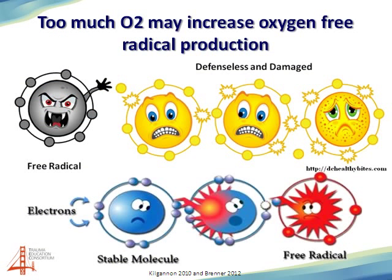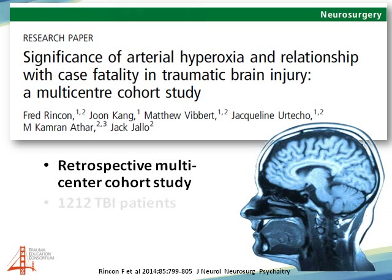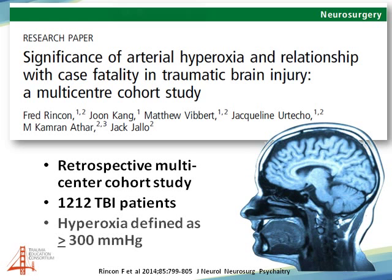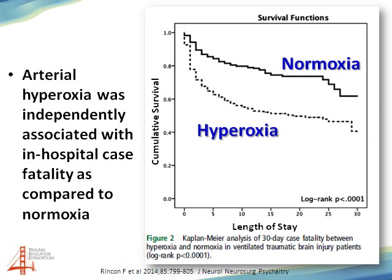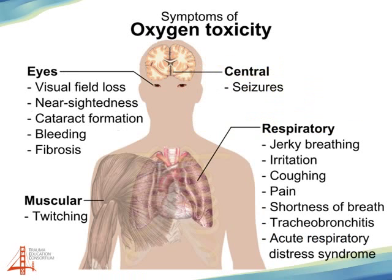So what are free radicals? Those are like little vampires that seek out nice, healthy, stable molecules or cells, and steal away the electrons from those molecules, leaving those poor little guys defenseless and damaged, which can cause disease or death. Here's another article that looked at almost 1,200 traumatic brain injured patients where they defined hyperoxia as greater than 300. When they compared the normoxia group to the hyperoxia group, again they found there was an increase in mortality just with having too much O2 alone.